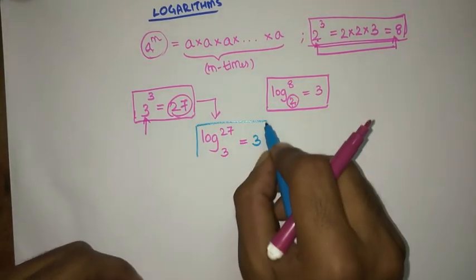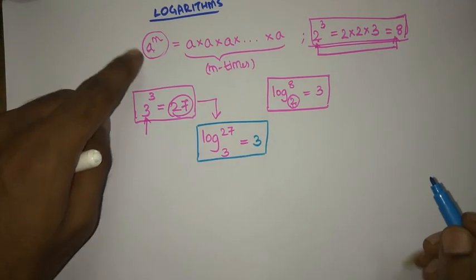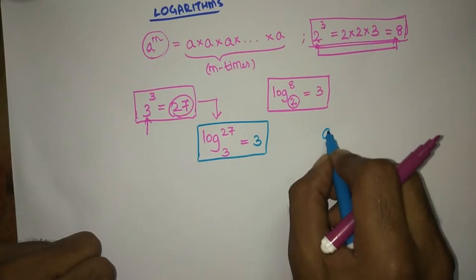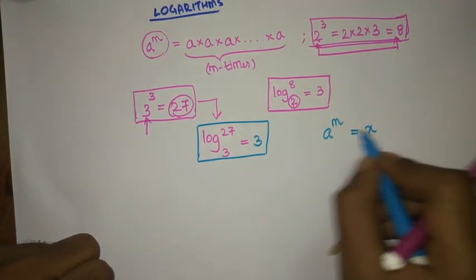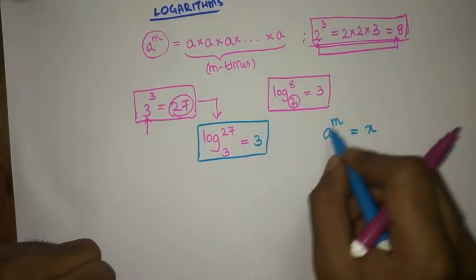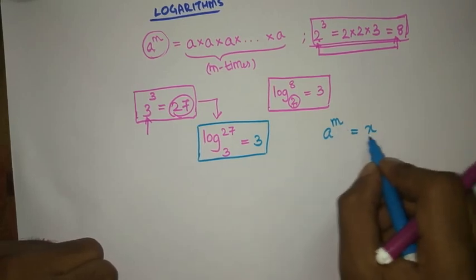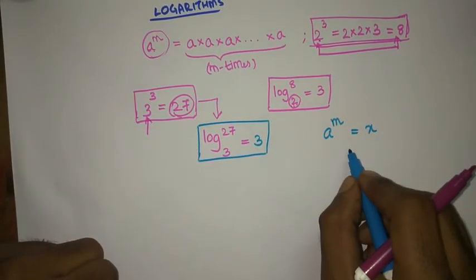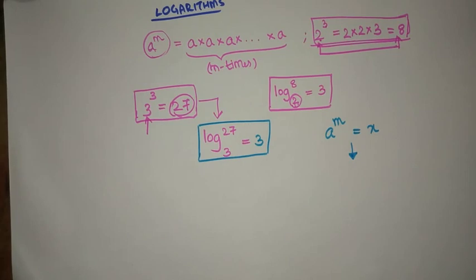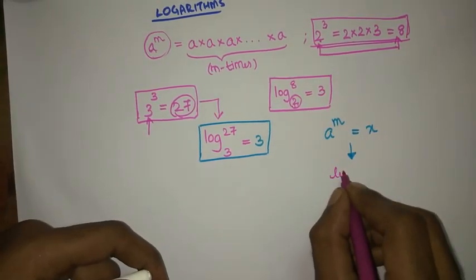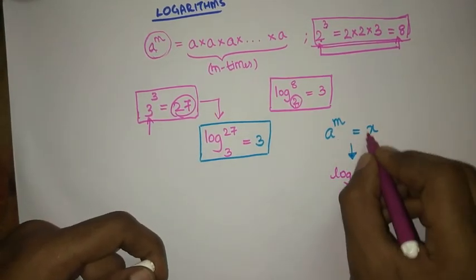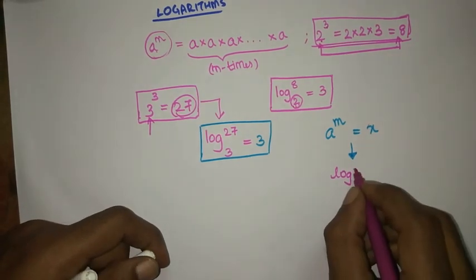This is how we convert any exponents and powers into logarithm. So I am going to give you the formula: if a power m is equal to x, it conveys that we need to multiply a, m times to get answer x. This same meaning can be represented in logarithms. So we are going to write log, and the answer x must be written here.